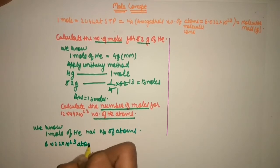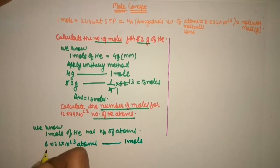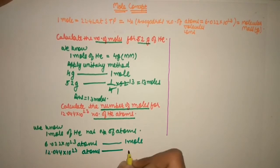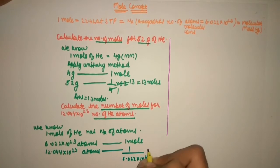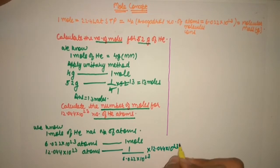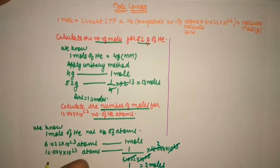6.022 into 10 to the power 23 atoms are present in 1 mole. The question gives 1.044 into 10 to the power 23 atoms — these are present in how many moles? 1 upon 6.022 into 10 to the power 23, into 1.044 into 10 to the power 23. After clear cancellation, the answer is 2 moles.